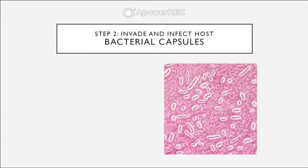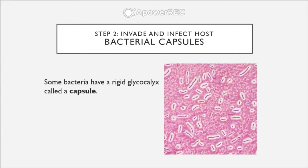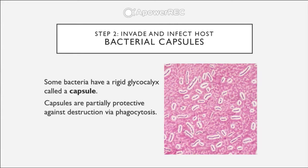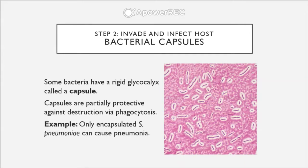The first group is bacteria. Bacteria have capsules, which as you recall is a rigid glycocalyx, and they are partially protective in that they prevent destruction via phagocytosis — which means to essentially consume or eat cells. These capsules help protect bacteria from being digestible. For example, only the encapsulated form of Streptococcus pneumoniae can actually cause pneumonia.